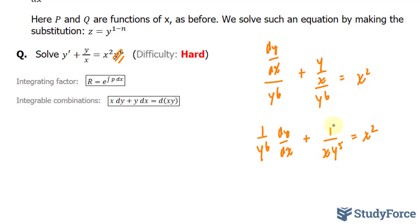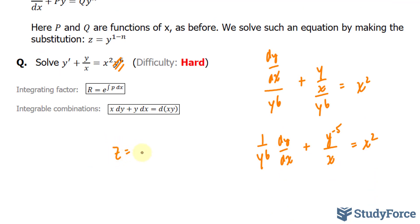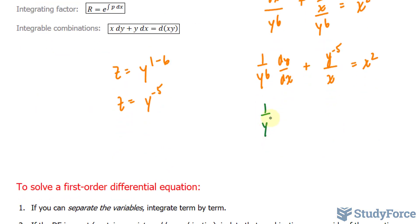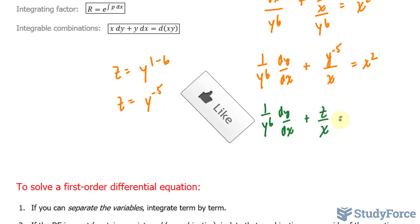Another way to represent the middle term is y^(-5)/x instead of 1/(x·y⁵). Now I'll set up the z substitution. Since z = y^(1 - n) and y was raised to the 6th power in the original equation, n = 6, giving z = y^(-5). Therefore I can substitute y^(-5) with z, giving (1/y⁶)(dy/dx) + z/x = x².